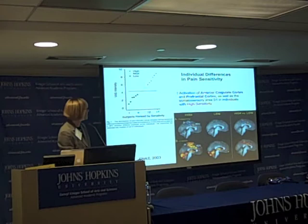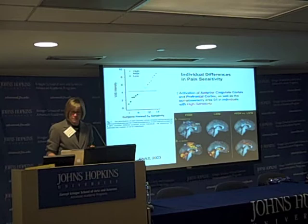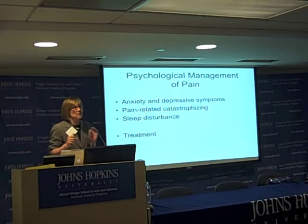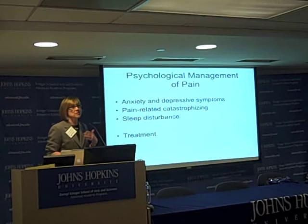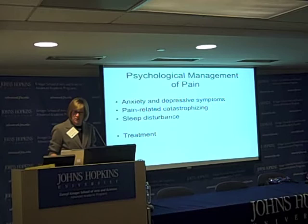Some of these key brain areas include the anterior cingulate cortex, the prefrontal cortex, and other areas that have been identified. Today I'll talk about some of the psychological factors that have been really well researched: anxiety and depression, pain catastrophizing — something I've spent a lot of time thinking about — sleep disturbance, which is now being studied systematically in the pain community, and I'll also touch on treatment.